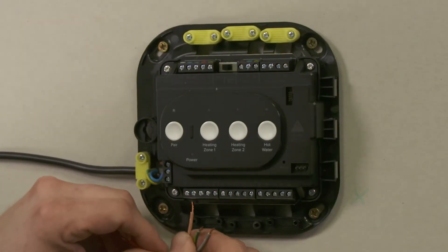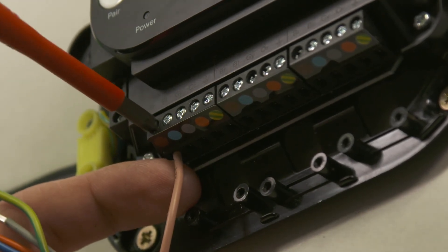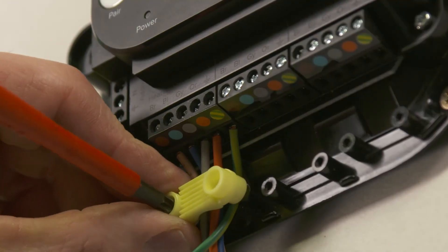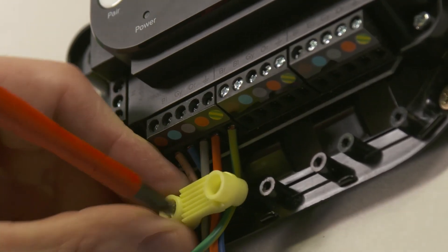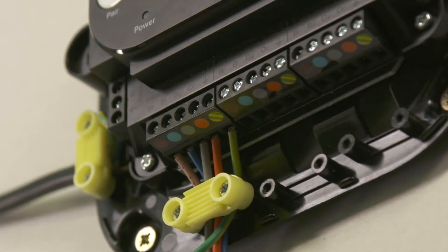Wire the zone valve for heating zone 1. The connections are marked and color coded for ease. Refit the wiring clamp, ensuring that the outer sheathing is secured. In this video, the outer sheathing is not clamped for clarity only.